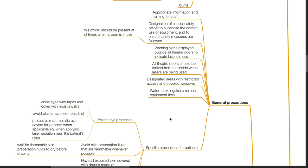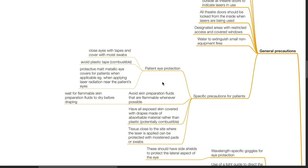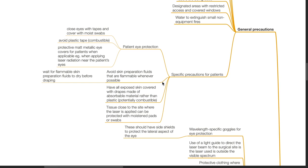Specific precautions for patients. Patient eye protection: Close eyes with tapes and cover with moist swabs. Avoid plastic tape which is combustible. Protective matte metallic eye covers for patients when applicable, such as when applying laser radiation near the patient's eyes. Avoid skin preparation fluids that are flammable whenever possible. Wait for flammable skin preparation fluids to dry before draping. Have all exposed skin areas covered with drapes made of absorbable material rather than plastic which is potentially combustible. Tissue close to the site where the laser is applied can be protected with moistened tats or swabs.